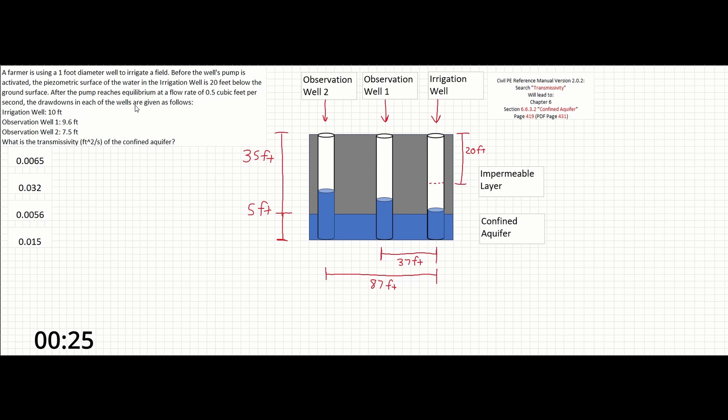the drawdowns in each of the wells are given as follows: the irrigation well drawdown is 10 feet, the observation well number 1 drawdown is 9.6 feet, and the observation well number 2 drawdown is 7.5 feet. What is the transmissivity in square feet per second of the confined aquifer?